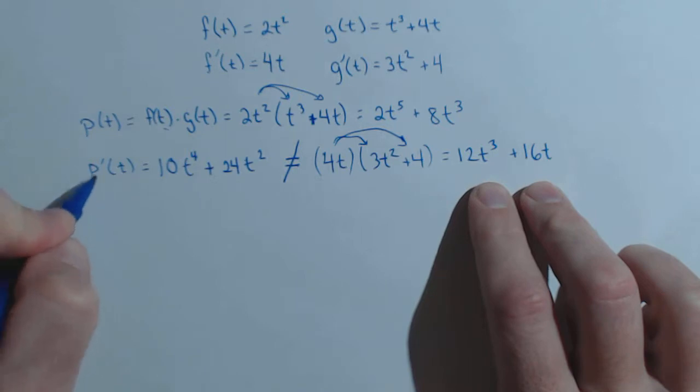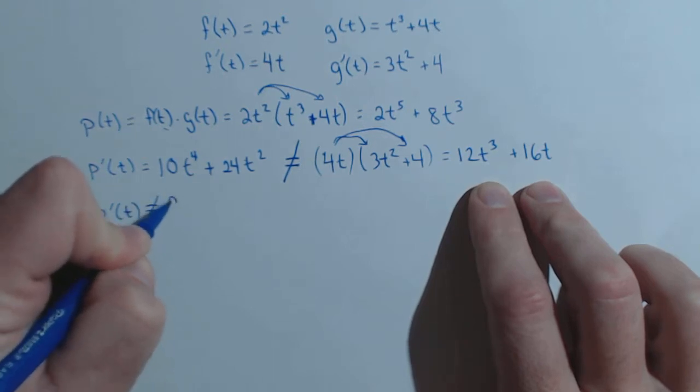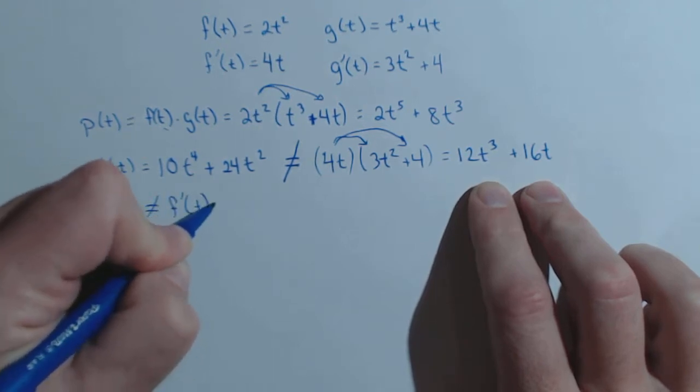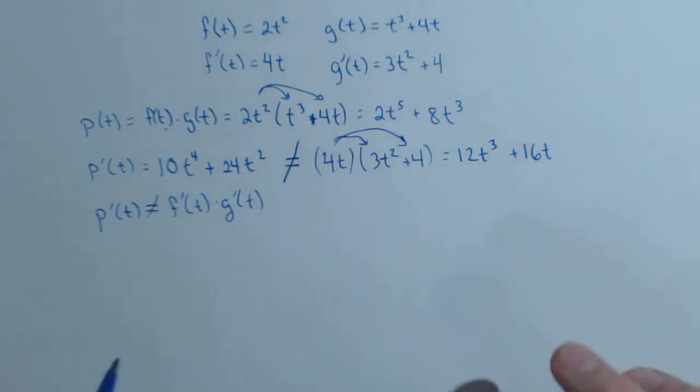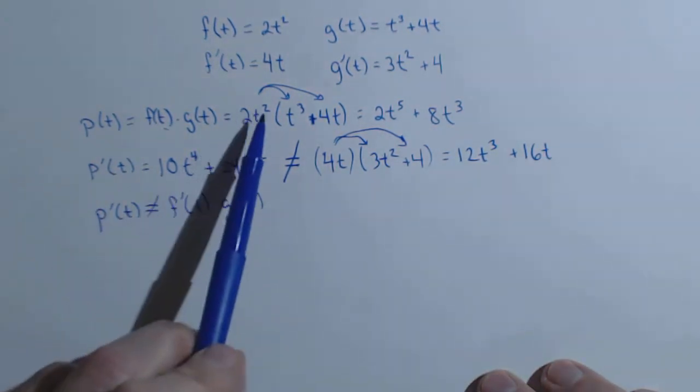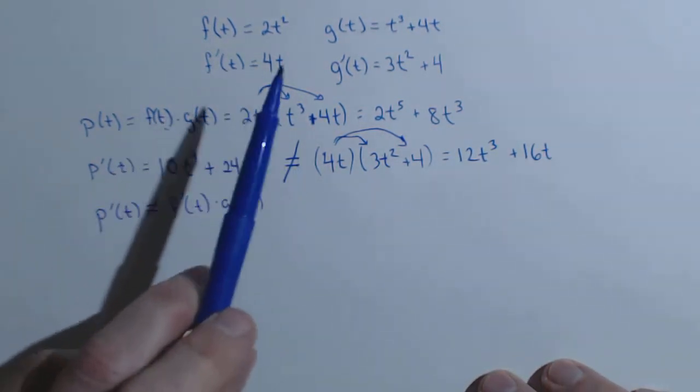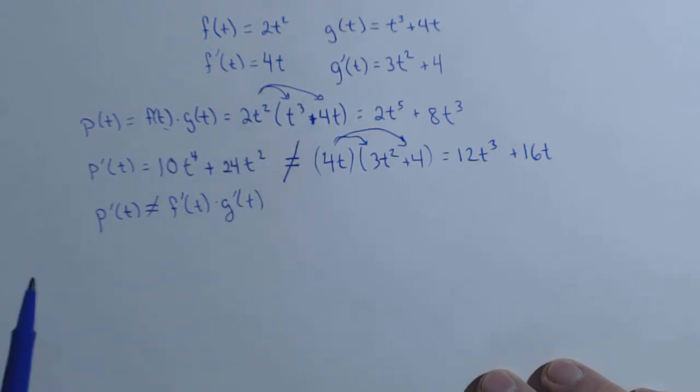So what that's telling us is p prime of t is not equal to f prime of t times g prime of t. The significance of this is when we have a product, we can't just multiply their derivatives together.